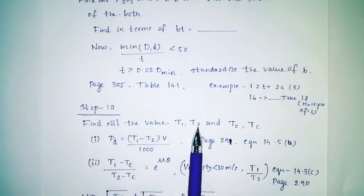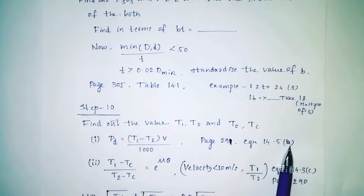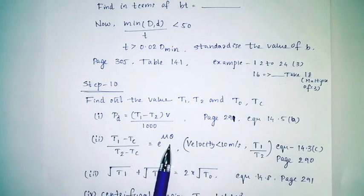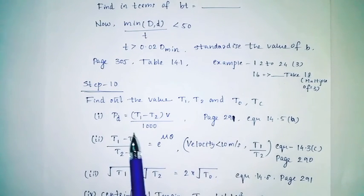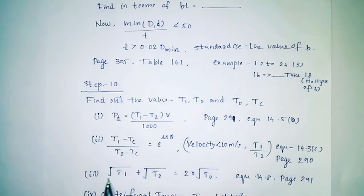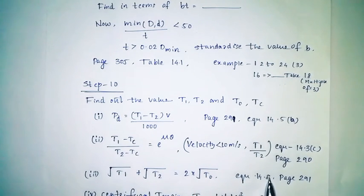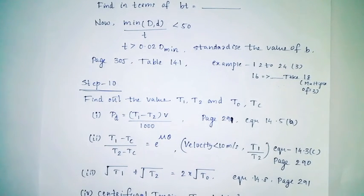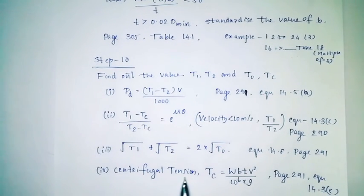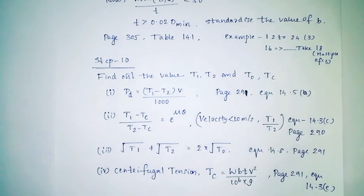Step 10: find out the values T1, T2, T0, Tc. pd is equal to (T1 minus T2) into v divided by 1000 — page number 29a, equation 14.8a. T1 minus Tc divided by T2 minus Tc equals E raised to νθ. For velocity less than 10 meters per second, T1 divided by T2 is equation 16.3c, page 89. Next, root T1 plus root T2 equals 2 into root T0 — equation 14.8, page 29.